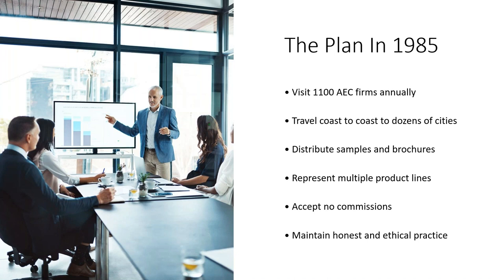We represented multiple product lines — depending on the city, sometimes between five to eight different product lines. I didn't want to be confined to one CSI division, so we had everything from glass to Acme brick to paints to concrete sealers. We had to make a separate presentation for each one and have different specification strategies for each — but that was the only way to get all those products into office master specifications.